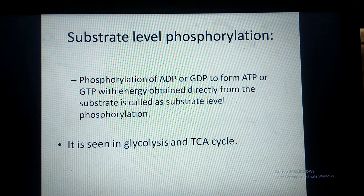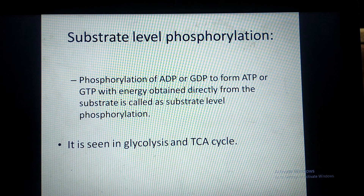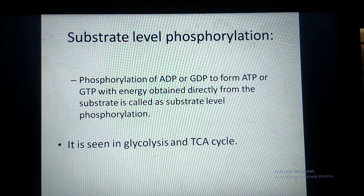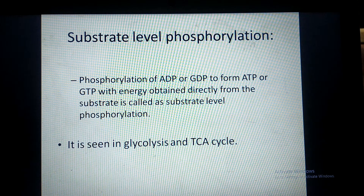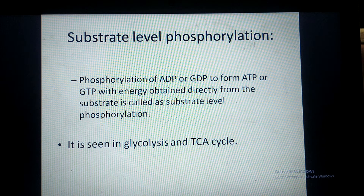When the electrons are transferred, the energy from those electrons is trapped and used for synthesis of ATP. But in the case of substrate level phosphorylation, the energy from the substrate is directly trapped and used for synthesis of ATP.